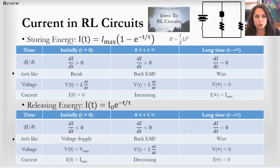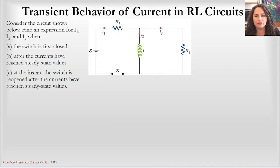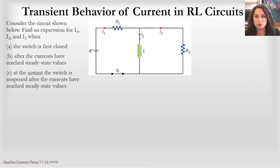The first problem I chose has algebraic answers — you could put numbers in here, but I'm just using algebraic answers. It asks about finding an expression for the current I1, I2, and I3. In this circuit, I1 is in the battery branch, I2 is in the middle branch, and I3 is on the right branch. We'll find expressions at different times: when the switch is first closed, after currents have reached steady state, and after the switch has been reopened after a long time.